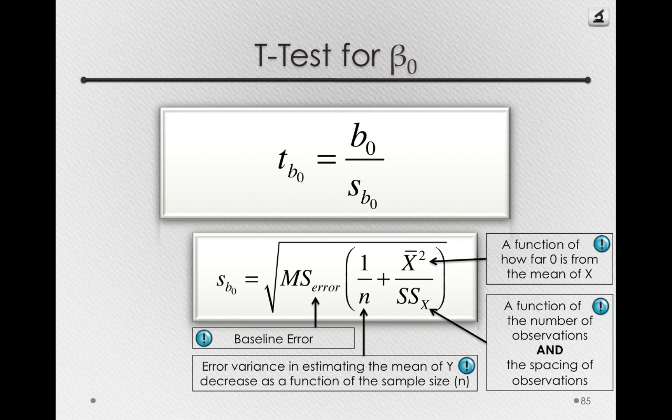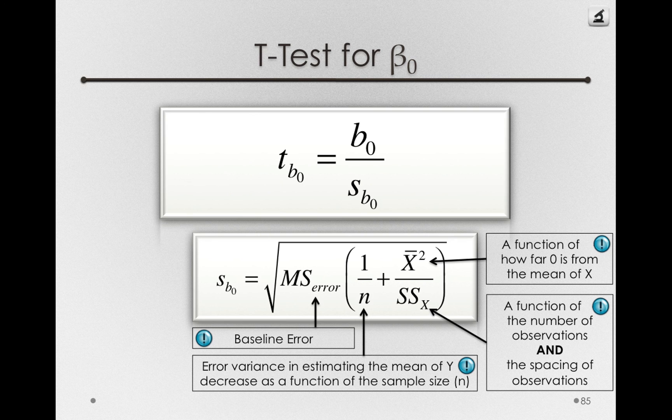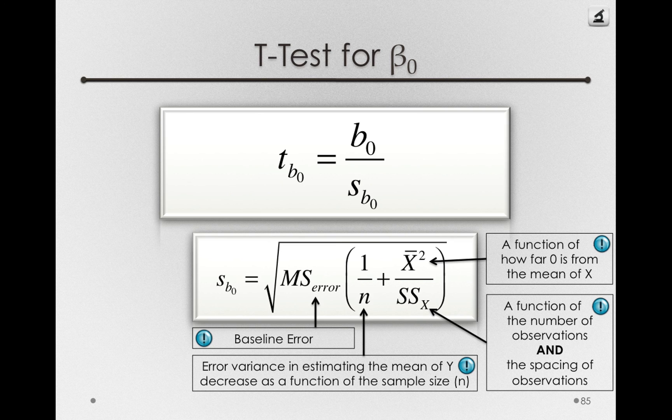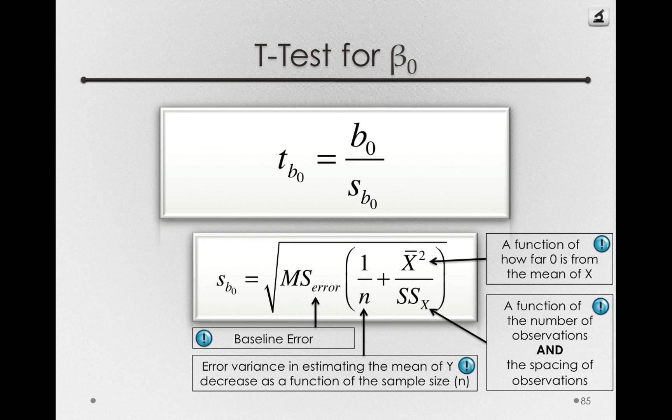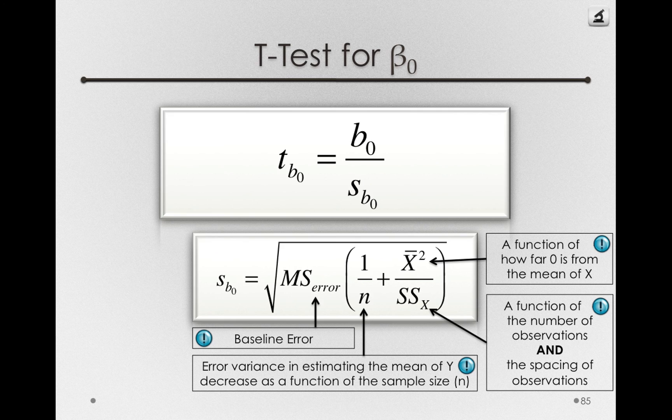Well, first off, you should certainly have a large sample size, that's always a good thing to do. But specifically, you should have the mean of x be as close to 0 as possible. And in fact, if what you're most interested in estimating is where your line hits the y-axis, that is, how much of y you have when you have 0 of x, well, your mean of x should be 0 then. You should measure lots of people when they have none of x.